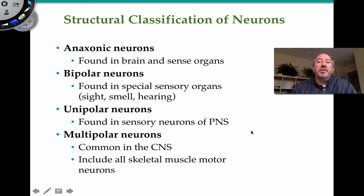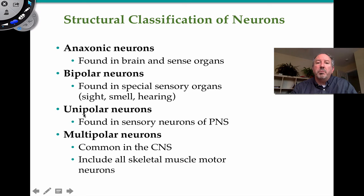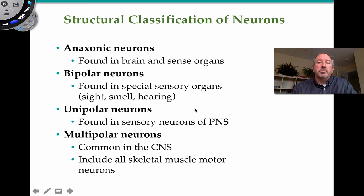There are four fundamental structural types of neurons. The anaxonic neuron has no axon and is found in the brain and sensory organs. Bipolar neurons are found in sensory organs. Unipolar neurons are found in sensory neurons carrying impulses in the afferent component — sending information to the central nervous system. Multipolar neurons, a classic example being motor neurons, are also common in the central nervous system.